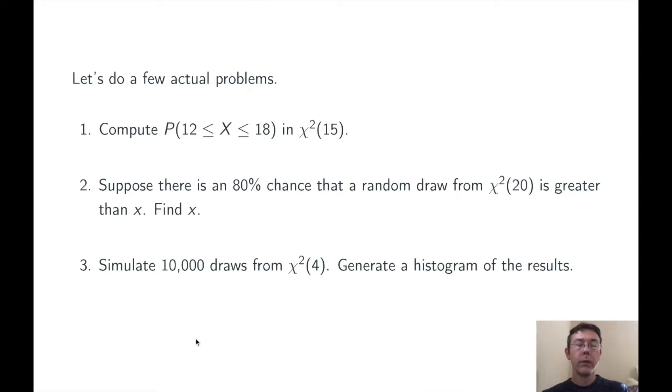Problem two. Suppose there's an 80% chance that a random draw from chi-squared of 20 is greater than x. Find x.